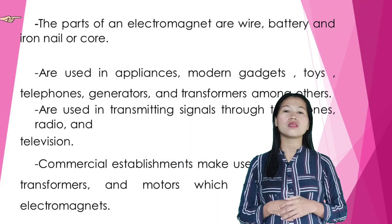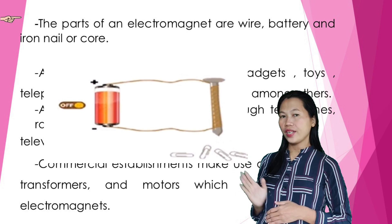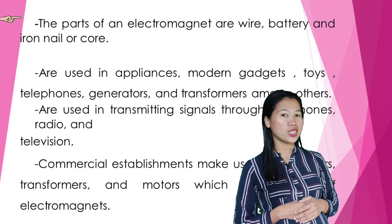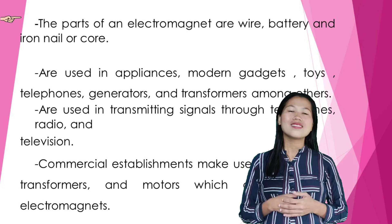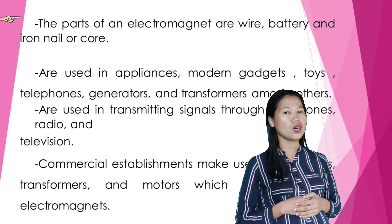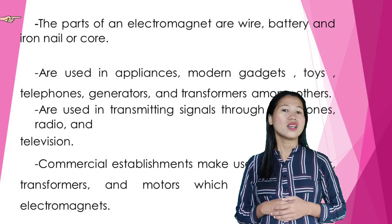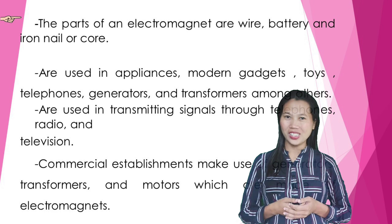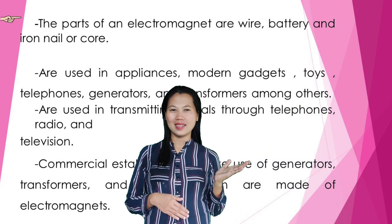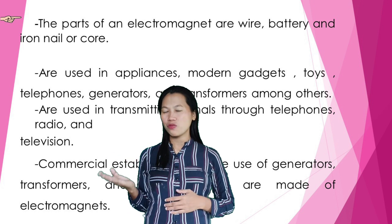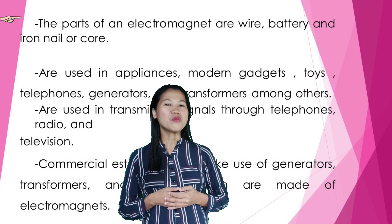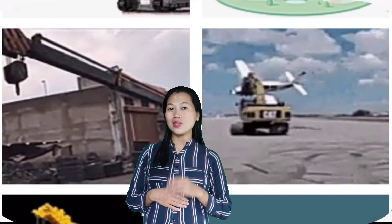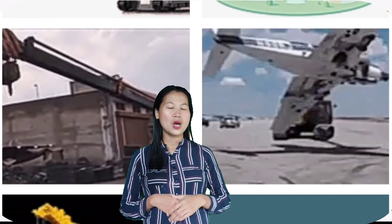The parts of an electromagnet are wire, battery, and iron nail or cord. They are used in appliances, modern gadgets, toys, telephones, generators, and transformers, among others. Electromagnets are used in transmitting signals through telephones, radio, and television. Commercial establishments make use of generators, transformers, and motors which are made of electromagnets. A crane that lifts heavy objects is also made of an electromagnet.